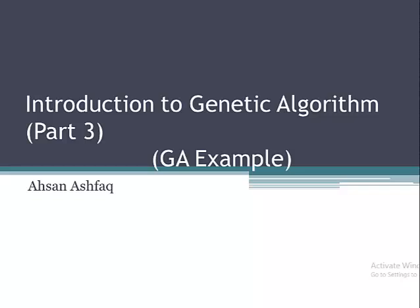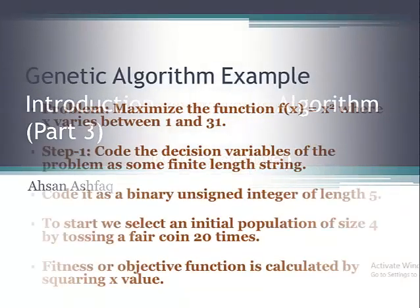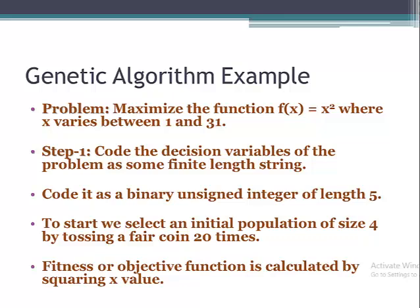The problem we have today is to maximize the function f(x) = x², where x varies between 1 and 31. We have to maximize x² — that will be our objective function — and the solution space is the set of all possible solutions between 1 and 31. We are going to solve this problem with the help of genetic algorithm.